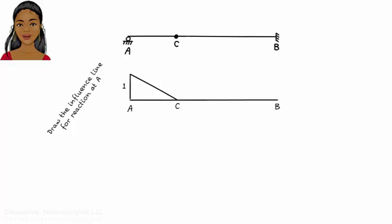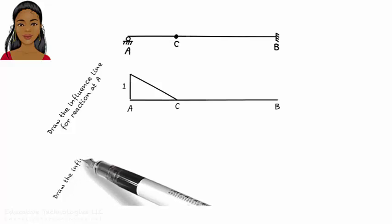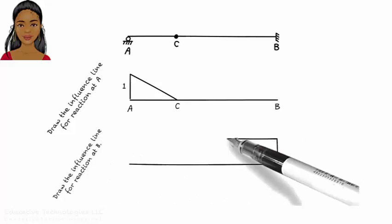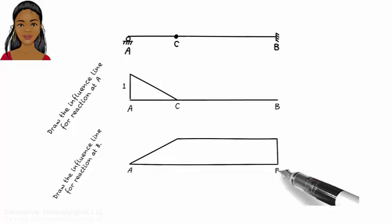What about the influence line for reaction at B? What does it look like? Push B up a unit. What do we get? When we push B up, C is going to go up as well, unless the adjacent segment limits the movement.